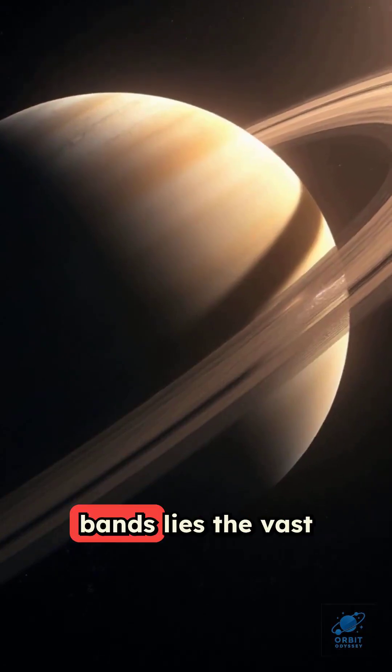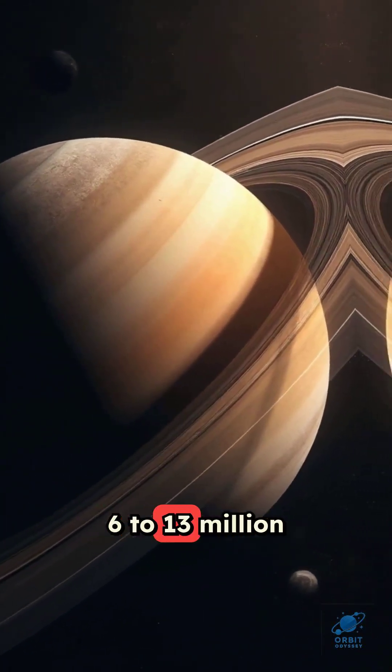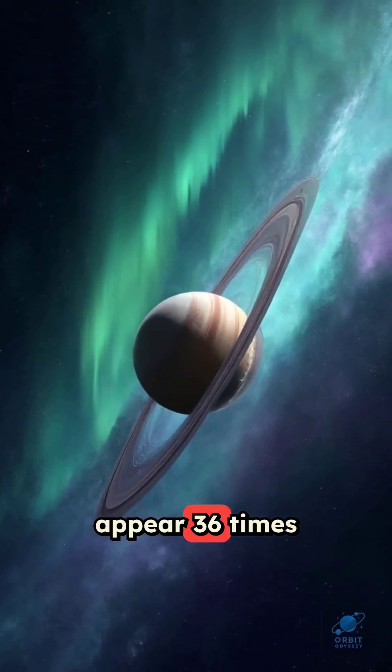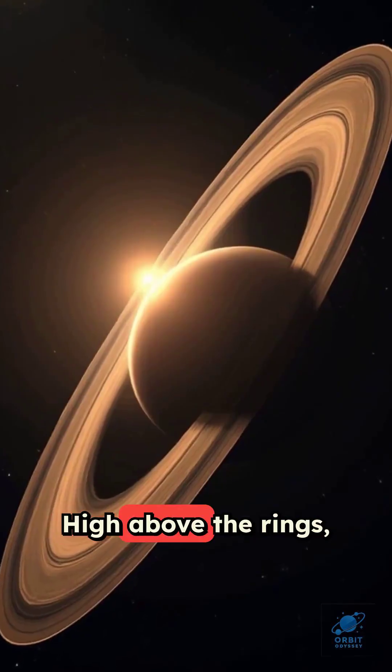Far beyond the bright bands lies the vast Phoebe ring, stretching from 6 to 13 million kilometers away, so immense it would appear 36 times larger than the full moon if it weren't almost invisible. High above the